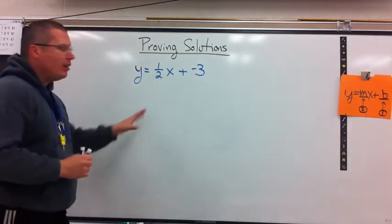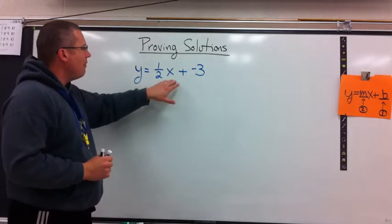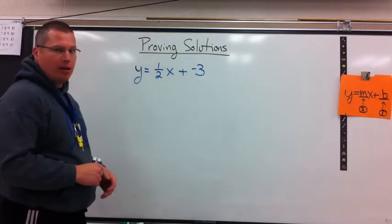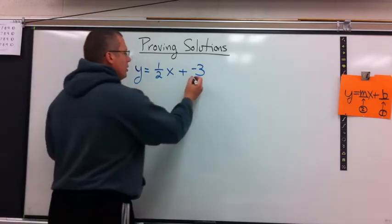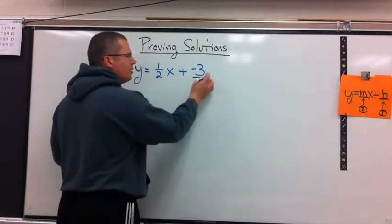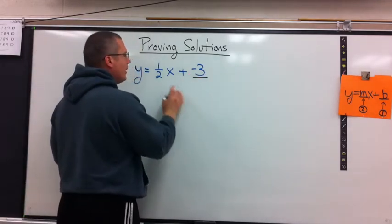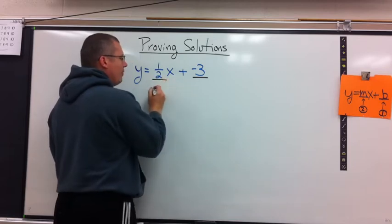What we're going to do is start getting linear equations. y equals one half x plus negative 3. Which number is the y-intercept? Negative 3 is the y-intercept because it's my stand-alone number. It does not have the x. One half is my slope.